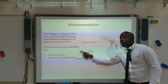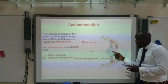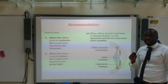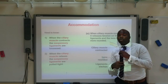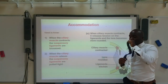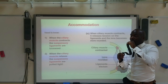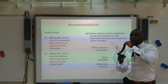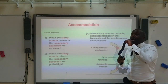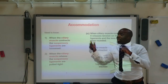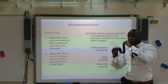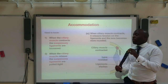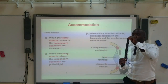Before we look at how these two structures control the thinness or thickness of the lens, let's look at how they work together. If the ciliary muscle contracts, this loosens the suspensory ligaments. However, if the ciliary muscle relaxes, this pulls the suspensory ligaments tight.